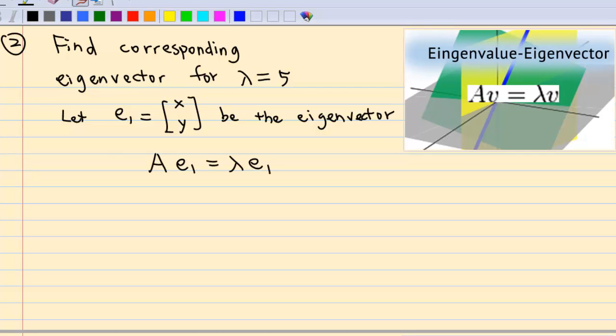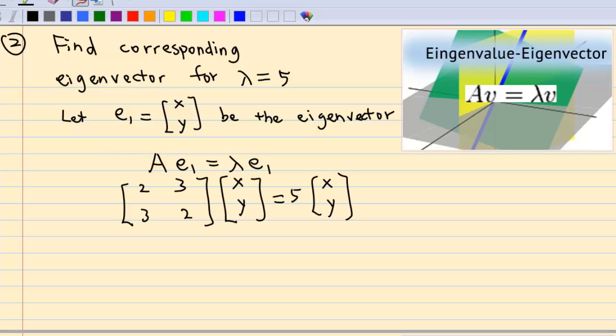This means A times E1 equal to lambda times E1, where A is a 2 by 2 matrix, 2, 3, 3, 2, and lambda equal to 5.